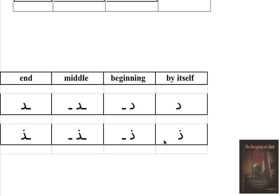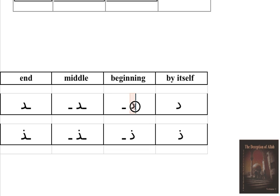Let us see how easy it is. Letter 'tha' by itself and letter 'tha' in the beginning look the same. All those letters that cannot connect from the left look the same at the beginning as they do by themselves — because when they are at the beginning they are not connected from the left. They go back to original form.